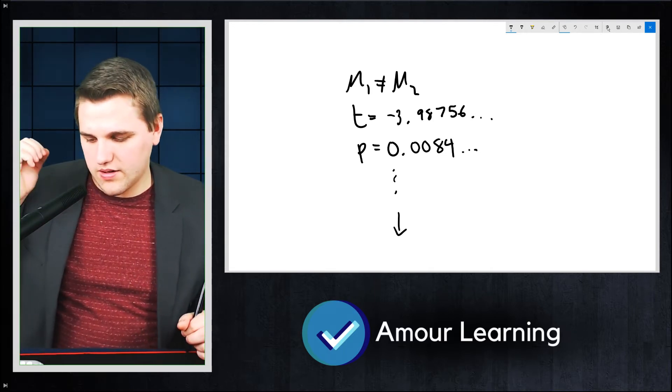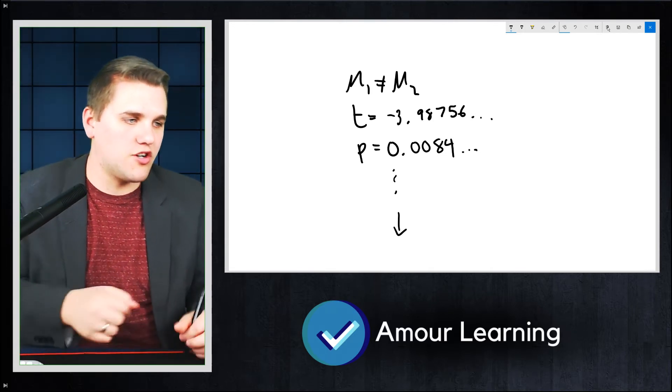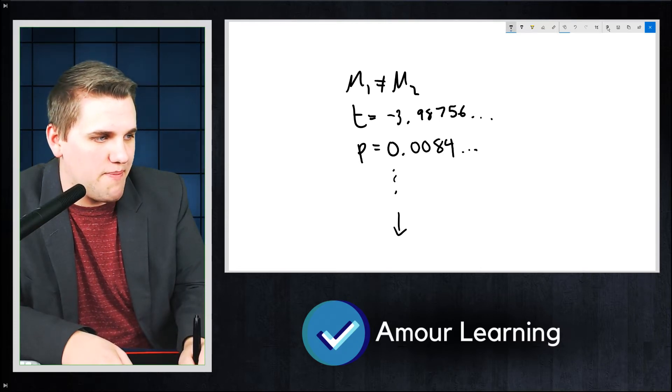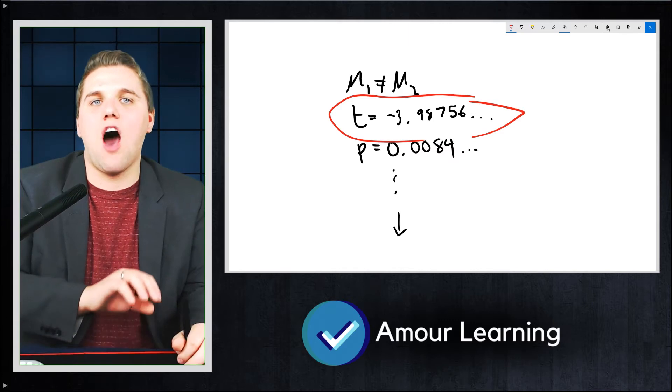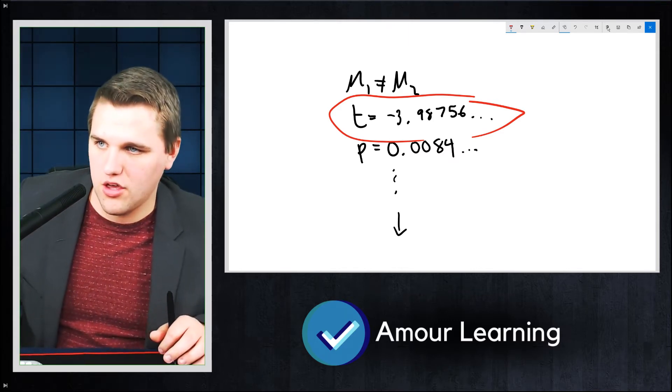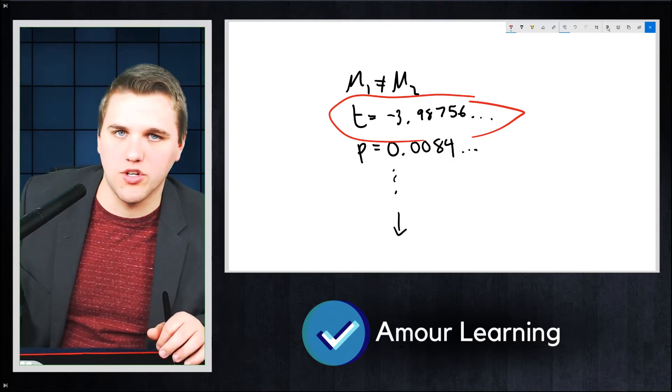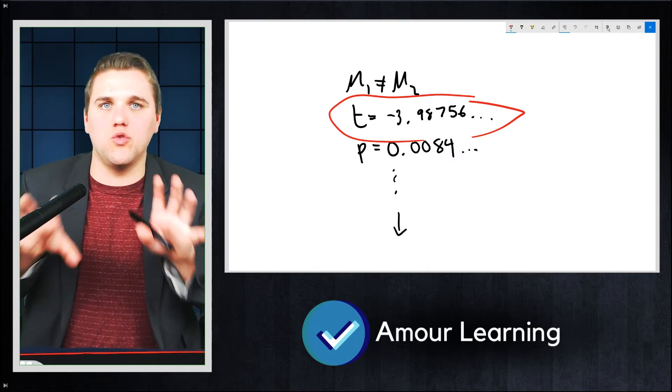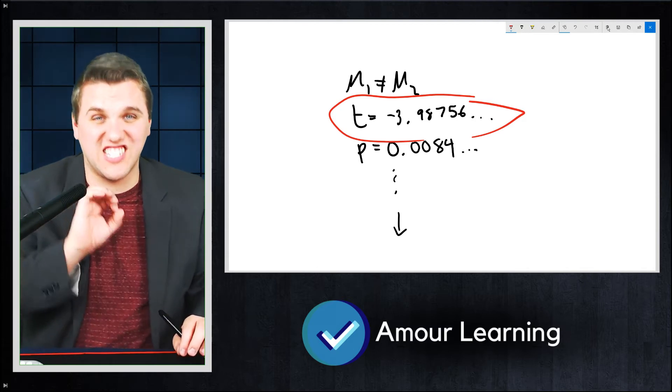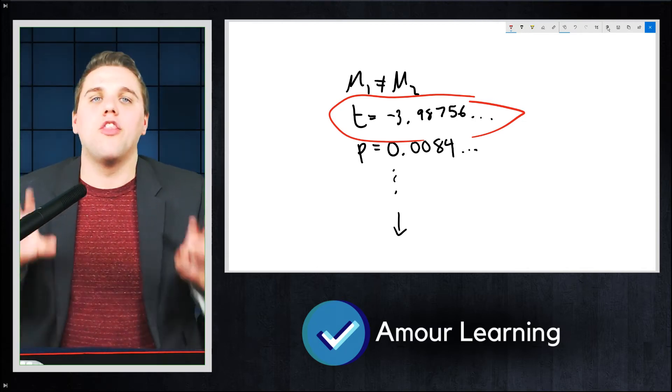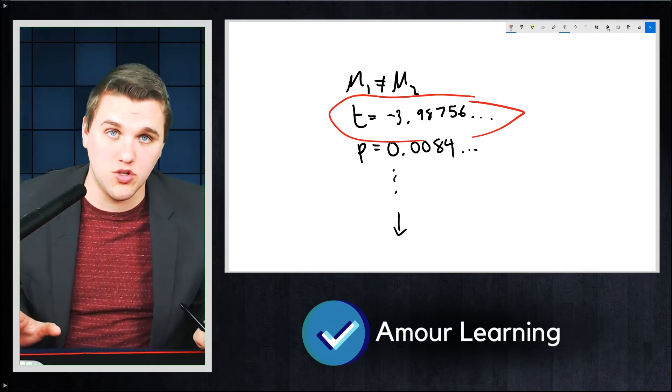Now, a couple things to mention. First off, this is your alternative hypothesis. We already know that. Your t-value basically determines how far off your results are, how far off the two samples are from each other. And in this case, the further the number is away from zero, the further the t-score is away from 0, the further the differences are between the two samples.